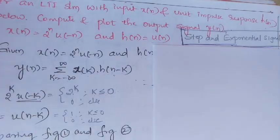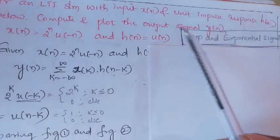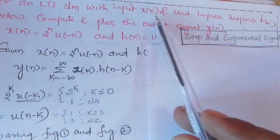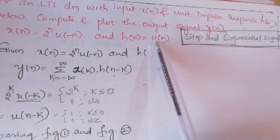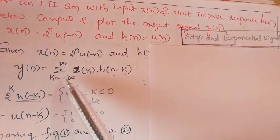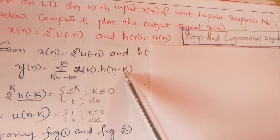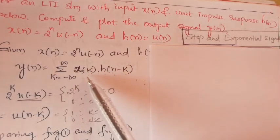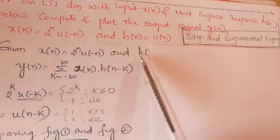In this video we will discuss the convolution between step signal and exponential signal. Consider an LTI system with input sequence x(n) and unit impulse response h(n). x(n) and h(n) are given. We have the formula: y(n) = summation over k from minus infinity to plus infinity of x(k) times h(n minus k). As per the formula, we first write the given sequences x(n) and h(n).